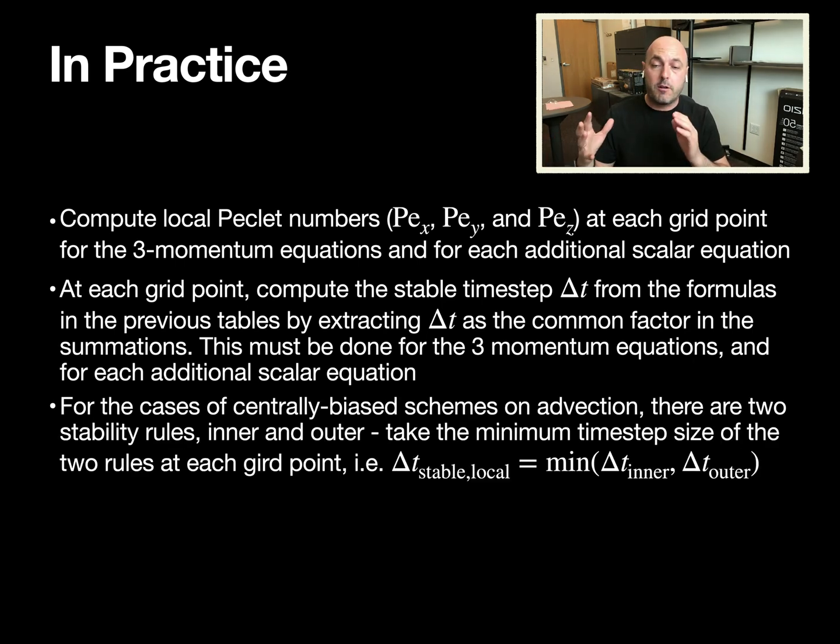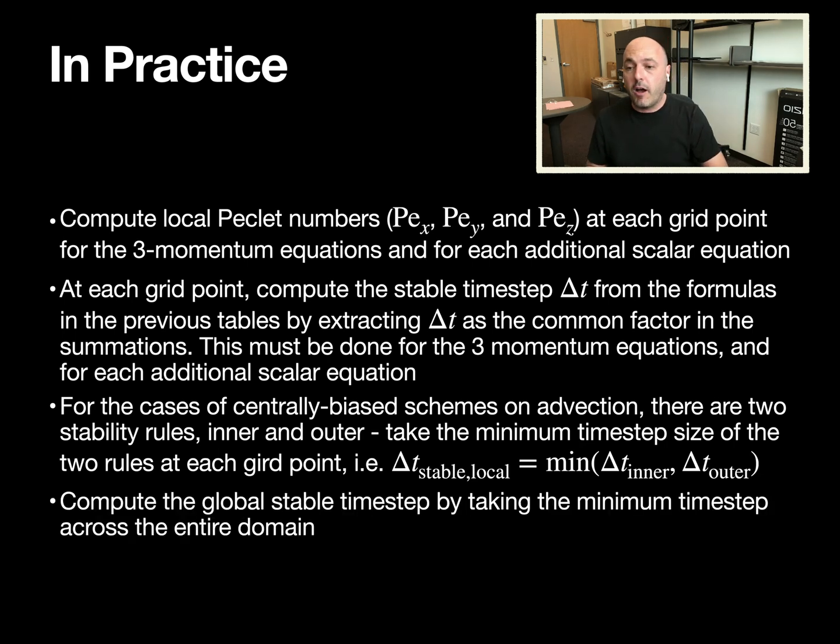For inner and outer rules, when you have an inner and outer rule because you have a central discretization scheme on advection, for example, then you need to take the minimum of the inner and the outer, but you will have a delta T for each equation still locally. Then finally, you compute the global stable time step by taking the minimum of all these time steps across the entire domain.